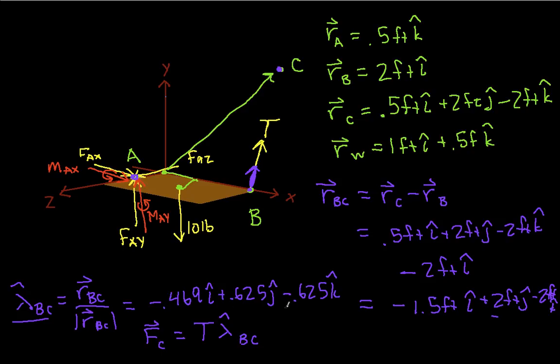So now we want to find the moments about point A exerted by the forces on the door. We have basically two forces that don't pass through A, so they're going to exert moments. The first one is the weight, and the second one is F sub C, the force exerted by the cable.